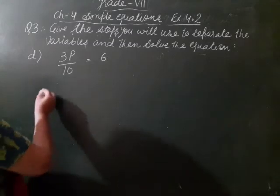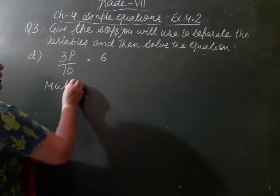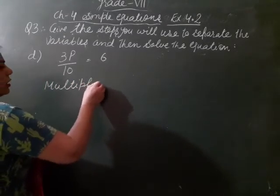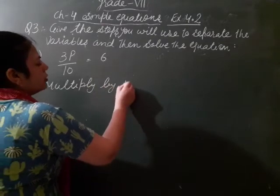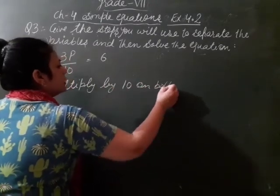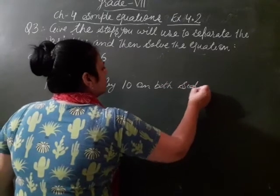So what's our first step? We multiply by 10 on both sides. 10 say kya kareenge? Multiply kareenge.